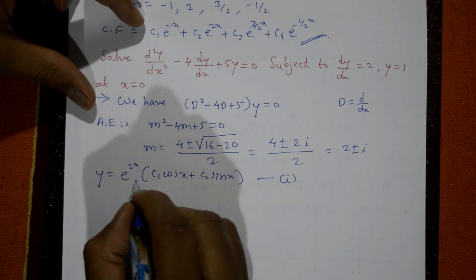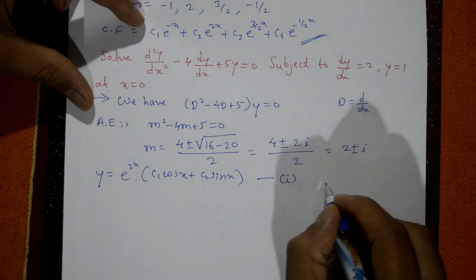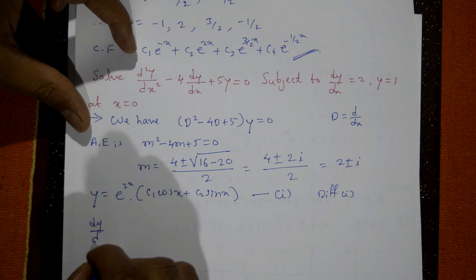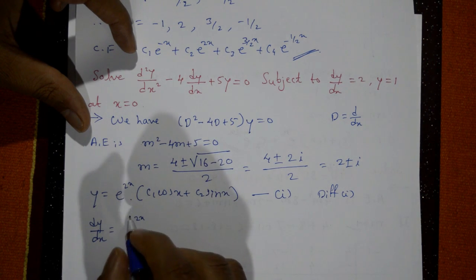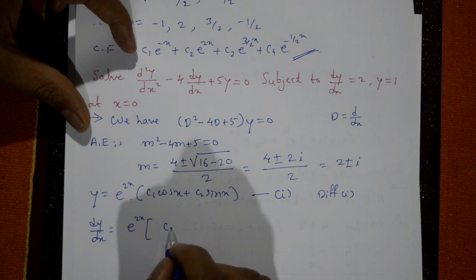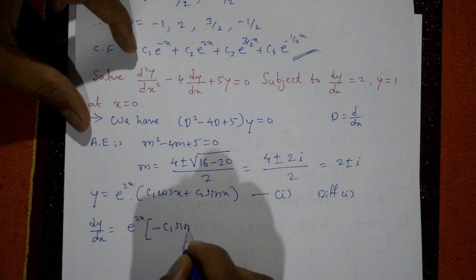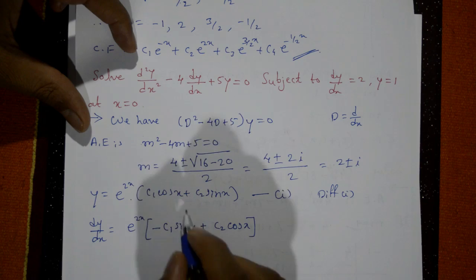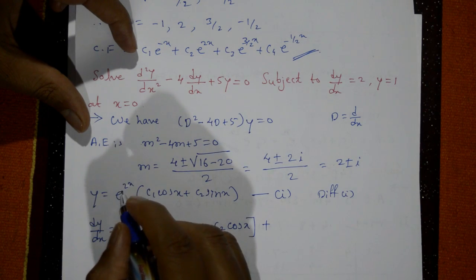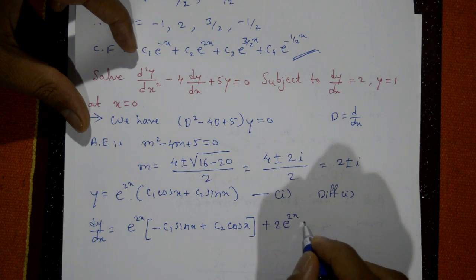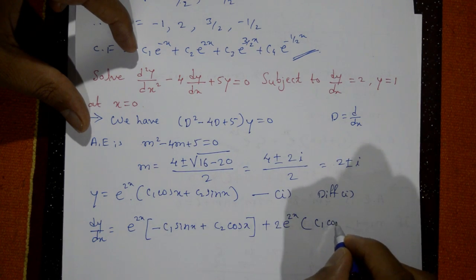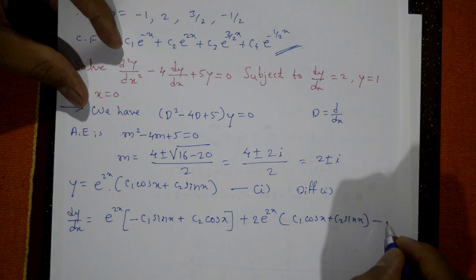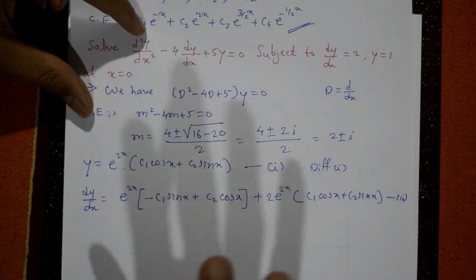Differentiate equation number one with respect to x using the product rule. So dy/dx = e^(2x)(−c₁ sin x + c₂ cos x) + 2e^(2x)(c₁ cos x + c₂ sin x). Call this equation number two. Now apply the initial conditions.